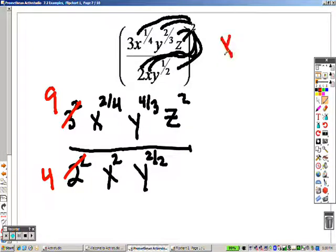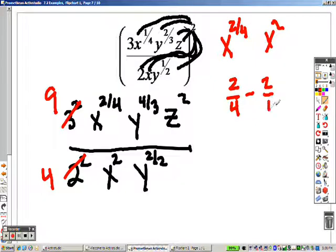I have x to the 2 fourths, and I have an x to the 2, so I basically need to do 2 fourths, because it's division, right, that means I need to subtract. So 2 fourths minus 2.